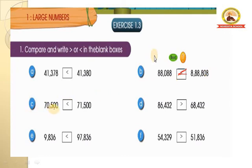Next C: 70,500 and 71,500. 7 and 7 are same. Then 0 versus 1 — 1 is greater. So 70,500 is less than 71,500. The fish opens its mouth towards the bigger number.